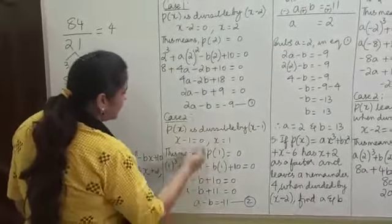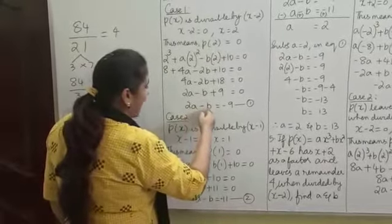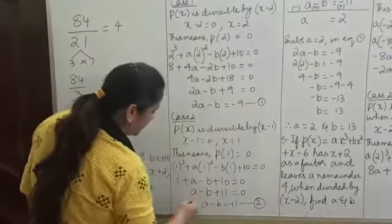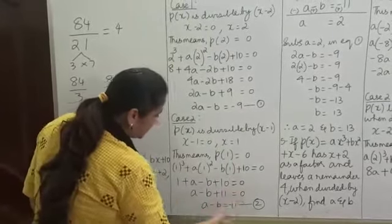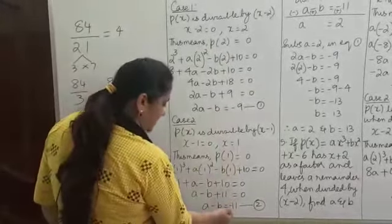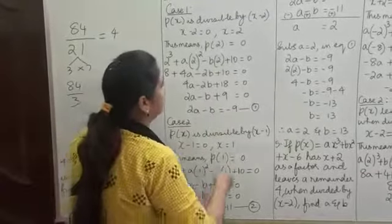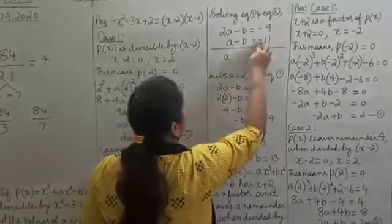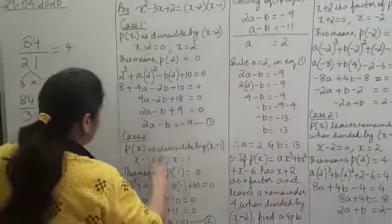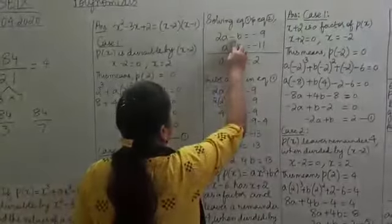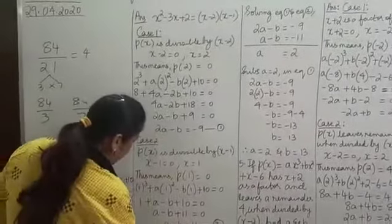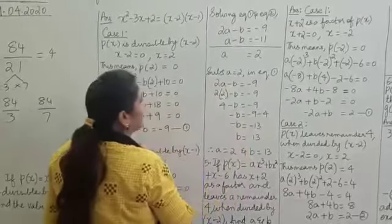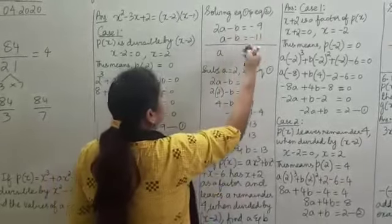We have the unknowns A and B on one side and the constant on the other side in both equations. Now we need to solve these two equations to find A and B. Write the equations one below the other: 2A minus B equals minus 9, and A minus B equals minus 11.